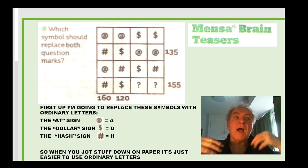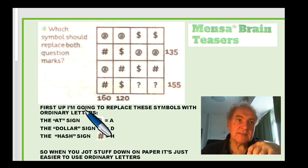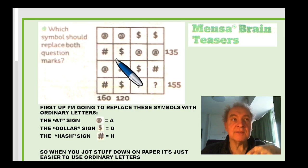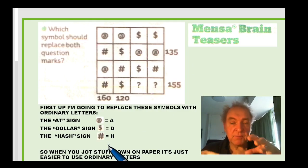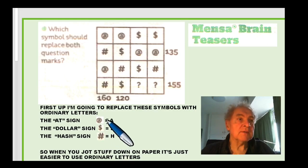First up, I'm going to replace the symbols with just some letters. There's no particular reason there should be symbols rather than letters. If I was going to actually solve this puzzle, and it's from the newspaper as I said, then I would want to write down a, d, and h. So the at symbol is a, the dollar symbol is d, and the hash symbol is h.